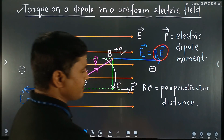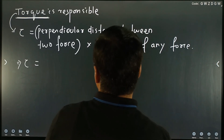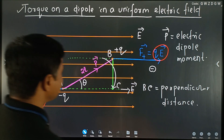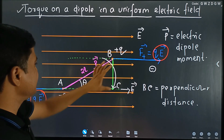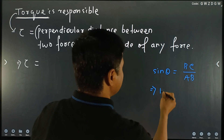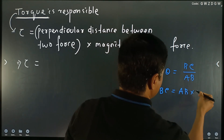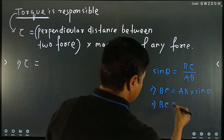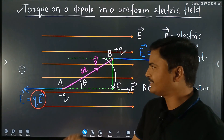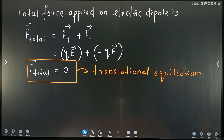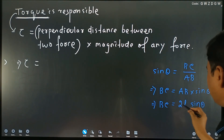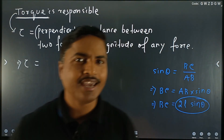From the right-angle triangle ABC, sinθ = BC / AB. Therefore BC = AB × sinθ. Since AB is the separation between the two charges of the dipole, which we wrote as 2L, we get BC = 2L sinθ. So the perpendicular distance between the two forces is 2L sinθ.